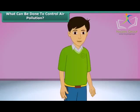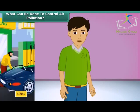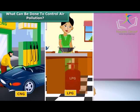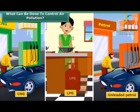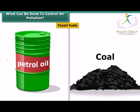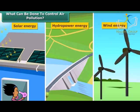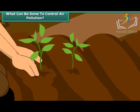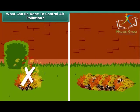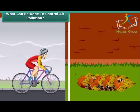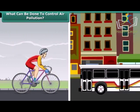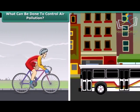Students, what should we do to reduce air pollution? There are many things we can do. We can use clean fuels such as CNG, LPG, and unleaded petrol. Instead of fossil fuels, we can use solar energy, hydropower, and wind energy. We can also plant new trees. Rather than burning dry leaves, we can put them in a compost pit. We can walk more, switch to bicycles for covering small distances, and use public conveyances.